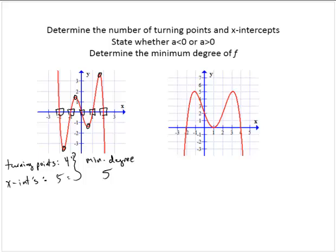Now focusing on the end behavior to figure out a. So notice that as we move far to the left, the function is going to positive infinity. As we move far to the right, the function is going to negative infinity. And so using that information from section 4.2, we would say that a is less than 0.